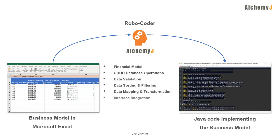AlchemyJ could implement program interfaces, such as calling another API. Other than the backend operations, it could also implement UI logic, such as showing error messages and hiding screen controls.